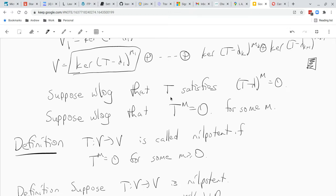So we're just gonna, without loss of generality, assume that t satisfies an equation like t minus lambda to the power m equals 0. And actually we can go further than that. Instead of looking at t minus lambda, we can just replace, we can look at t prime if we replace t with t minus lambda, then we can suppose without loss of generality that t to the m equals 0 for some m.